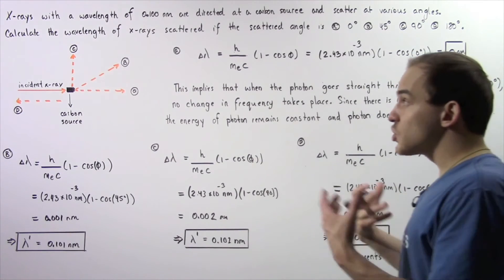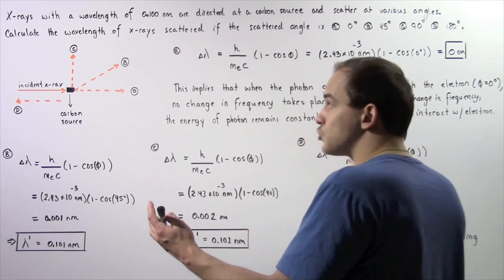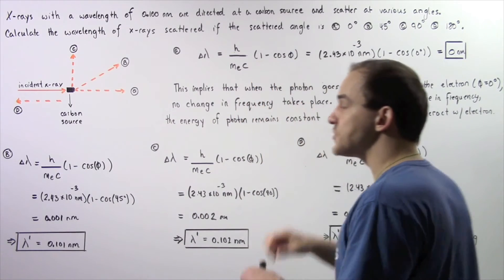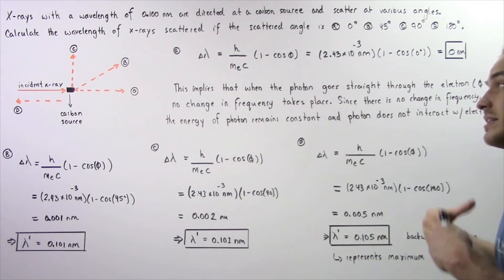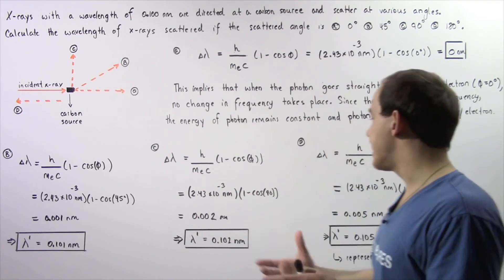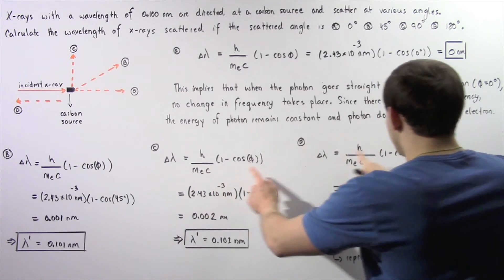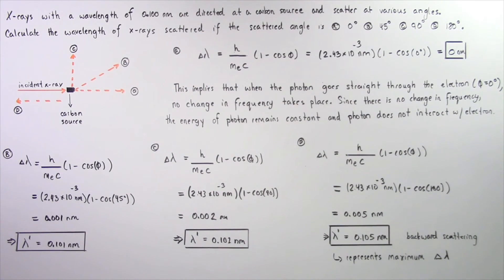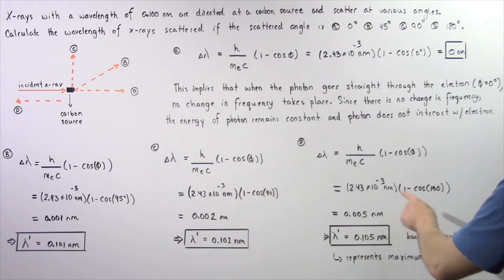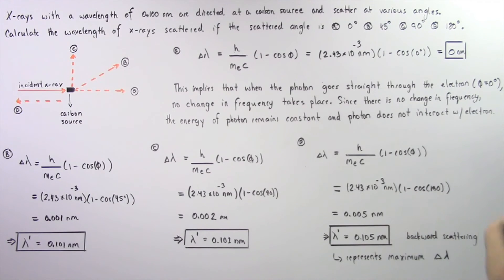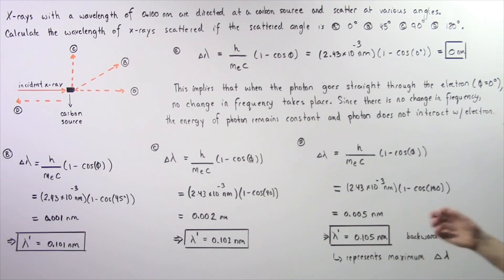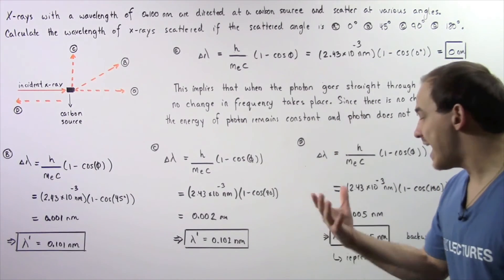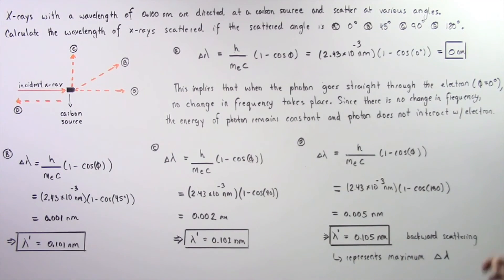Finally, we move on to Part D. Here the photon travels, collides with the electron within the carbon source, and bounces back, traveling in the opposite direction along the x-axis. Applying the same equation with an angle of 180°: cosine of 180° equals negative 1, so 1 minus (−1) equals 2. Two multiplied by 2.43 × 10⁻³ nanometers gives us about 0.005 nanometers. Adding that to 0.100 nanometers gives a scattered wavelength of 0.105 nanometers.